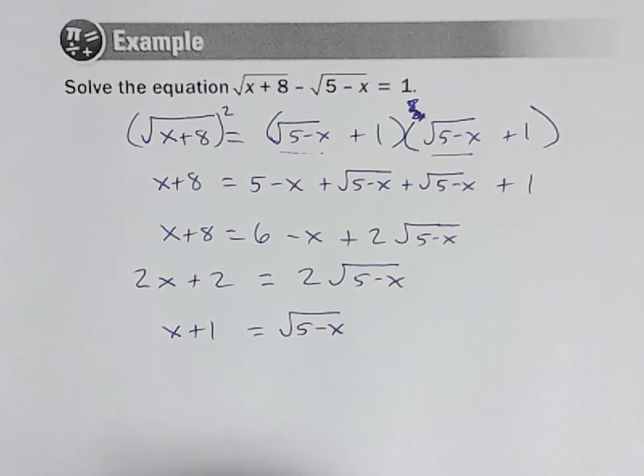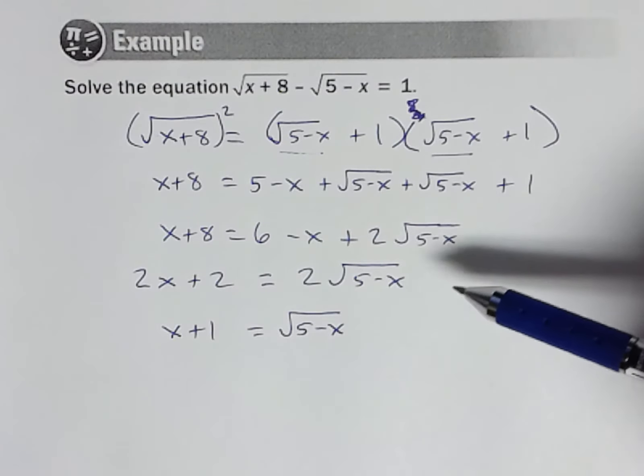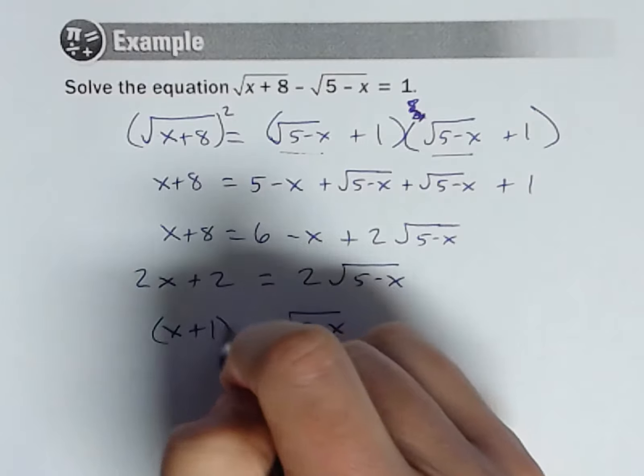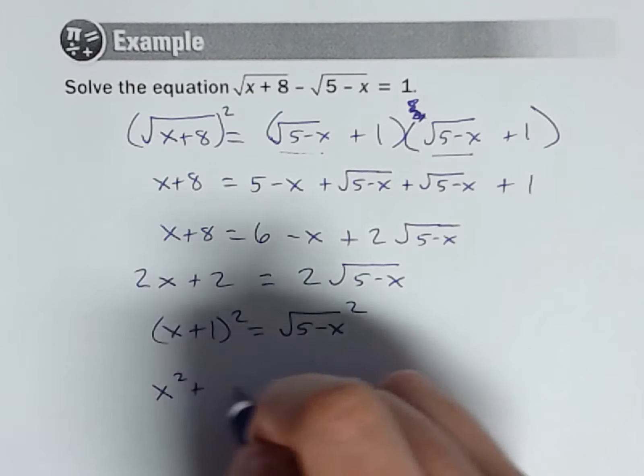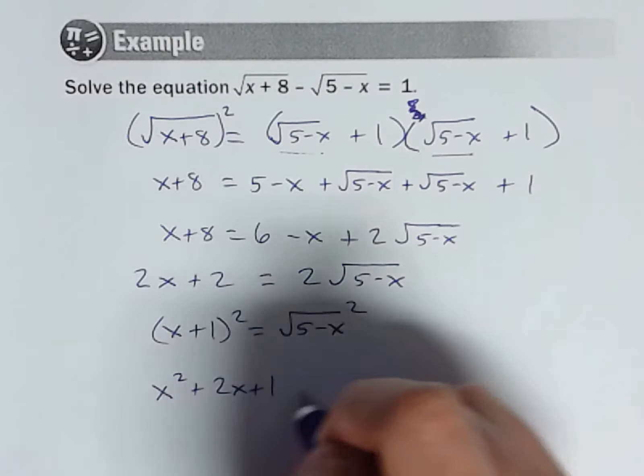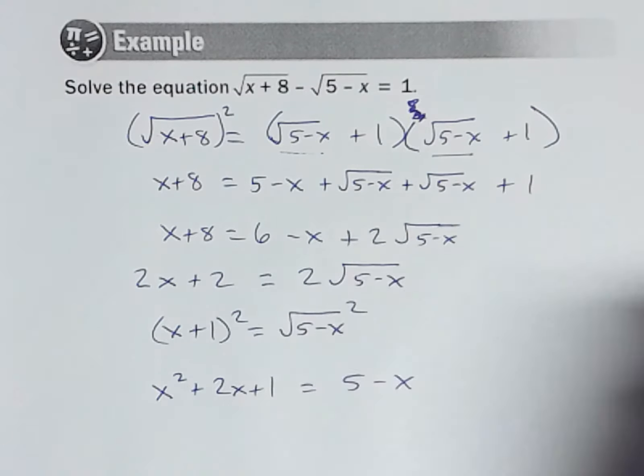All right, now it's not looking too bad. But notice we've done a lot of work to get here. Let's square both sides. And so x squared plus 2x plus 1 equals 5 minus x.